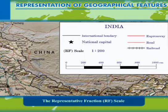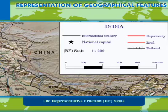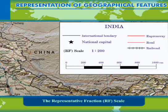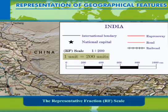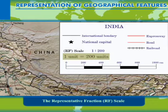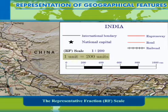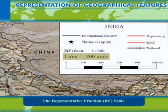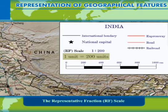Since it has no unit, the RF can be universally used all over the world. Any suitable unit can be placed on both sides and used to calculate the distance on the map. The RF just says that 1 unit is equal to 200 units, and the unit may be any. The numerator, or the value of distance on the map, is always 1. This scale, however, needs some calculation to get an idea of what it actually represents.